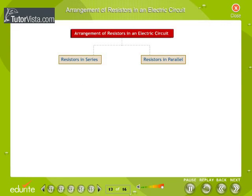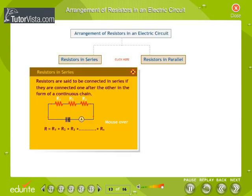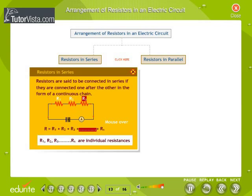Arrangement of resistors in an electric circuit: In an electric circuit, resistors are arranged either parallel to each other or in series. Resistors in series: Resistors are said to be connected in series if they are connected one after the other in the form of a continuous chain. Effective resistance of a circuit when resistors R1, R2, R3 until Rn are connected in series is given by the relation R equals R1 plus R2 plus R3 plus until plus Rn.